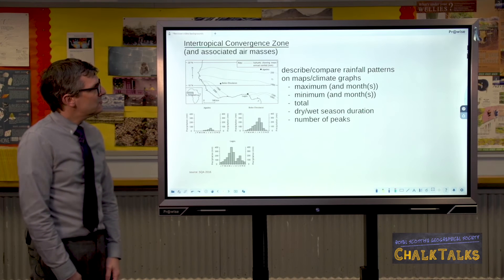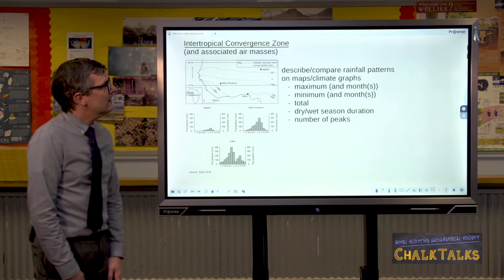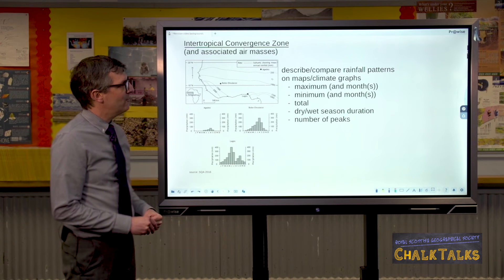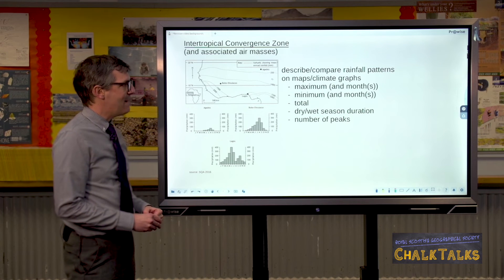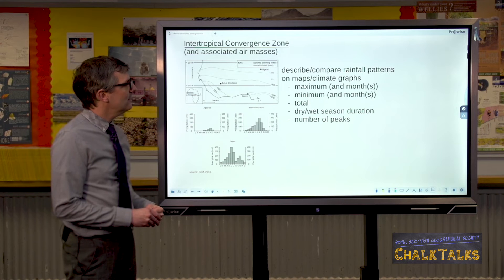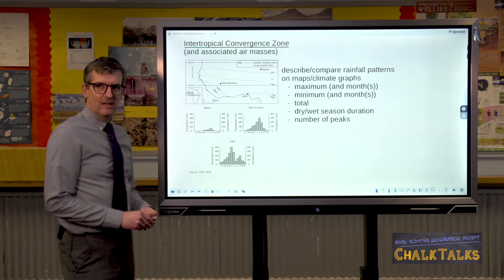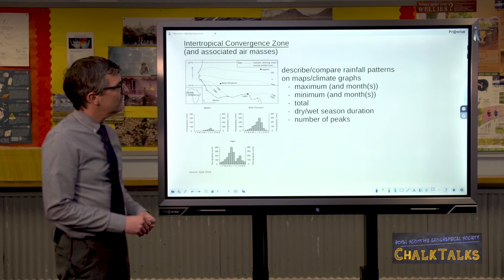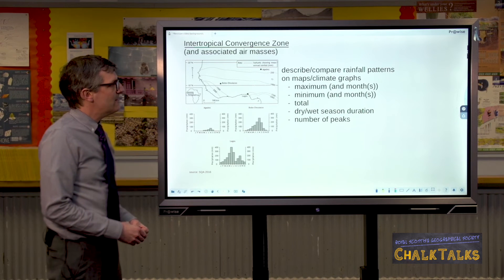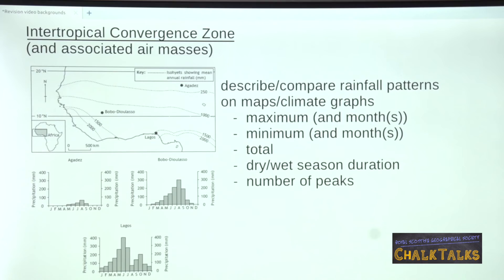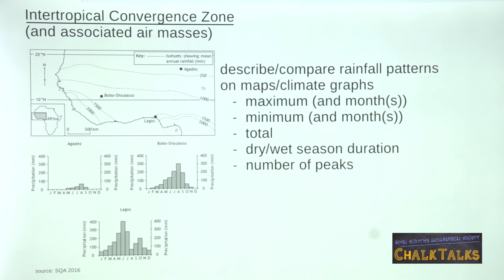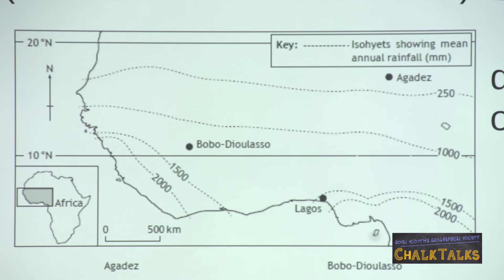In the exam, there are two things that you'll need to do. First of all, you might be asked to describe and compare the rainfall patterns on maps and climate graphs. And then you might need to relate this to the movement of the ITCZ and the air masses. When you're asked to describe and compare rainfall patterns, it might be on maps or it might be on climate graphs. This particular map shows isohyets — lines of equal rainfall.